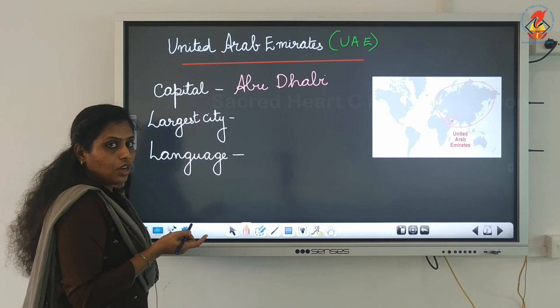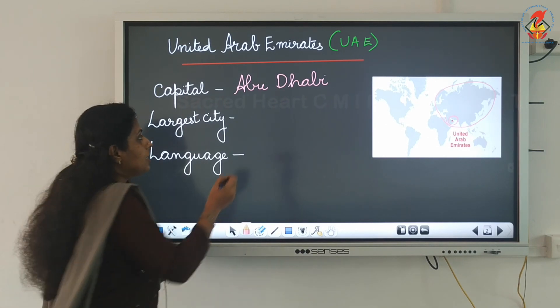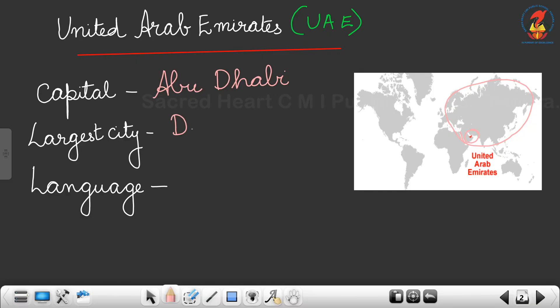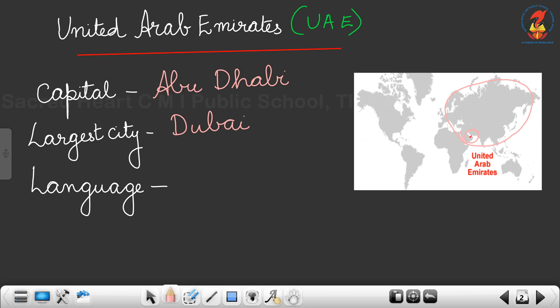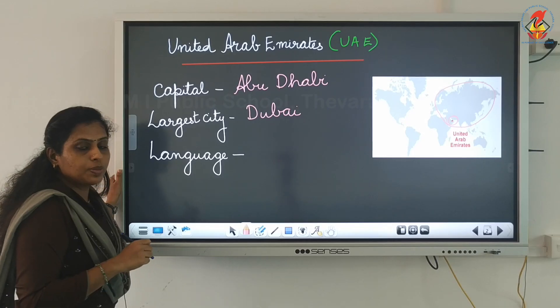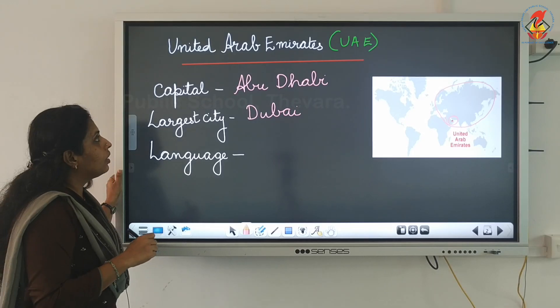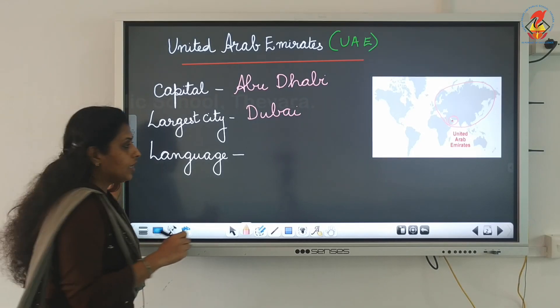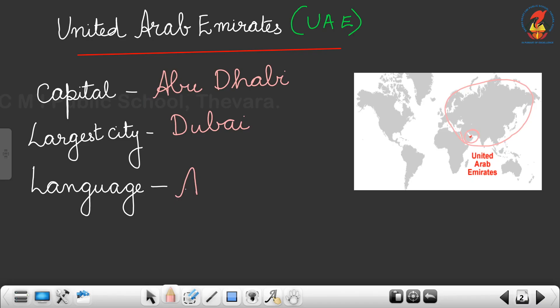The largest city of UAE is Dubai, and the language spoken in UAE is Arabic.